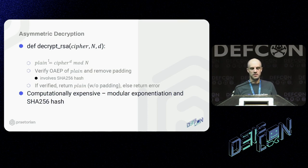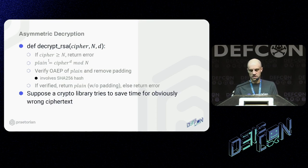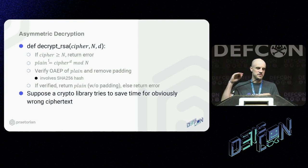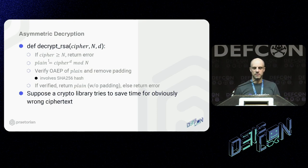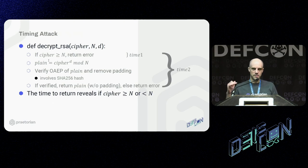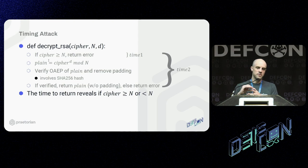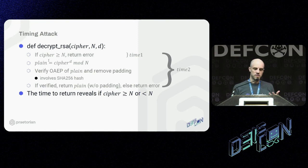This optimization shouldn't expose any information since N is supposed to be a public value — but it does create a timing differential. If I provide a ciphertext greater or less than N, the decrypt function returns in one of two different times. If I can observe that timing difference across the network, I can glean information about what N actually is. I took a JWE with a cipher encryption key of 2^2047, then one with 2^2048 — knowing these would be less than and greater than N respectively — and submitted both to my B2C token endpoint, then observed and compared the response times.